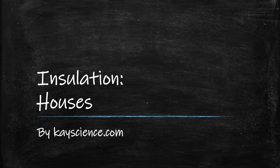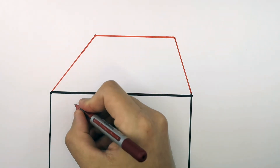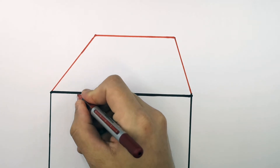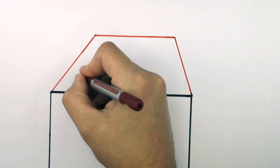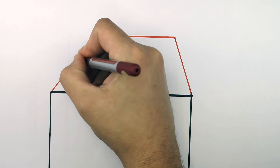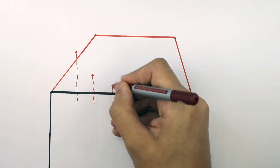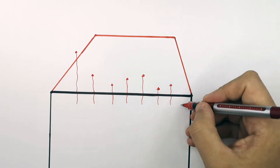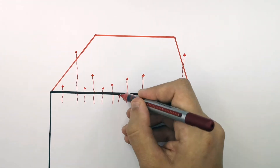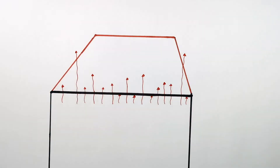This is a house, and these lines represent energy being transferred from inside the house to the roof cavity and then to the outside surroundings. To keep your house warmer, you don't want this energy to be transferred to the outside — you want this energy to remain in the thermal energy stores inside the house.